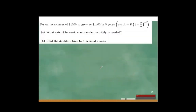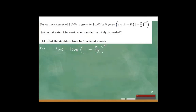For an investment of $1,000 to grow to $1,400 in five years — Part A: what rate of interest compounded monthly is needed? I substitute the given values: A = $1,400, P = $1,000, N = 12 (monthly), T = 5 years. Dividing both sides by 1,000 gives 1.4 = (1 + R/12)^60, since 12 times 5 is 60.